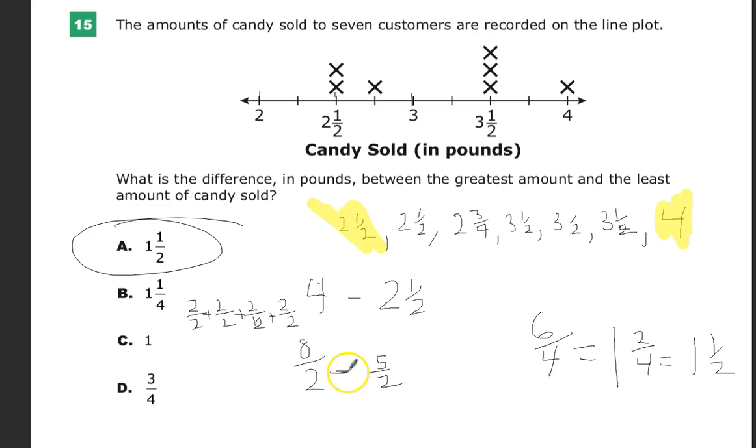So I get 8 over 2 minus 5 over 2, and that gives me 3 over 2, which is, of course, when I reduce it, 3 divided by 2 is 1, 1 left over, over 2. So 1 and 1⁄2.